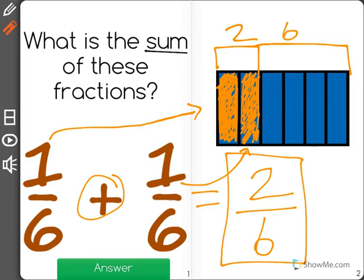And another way you could see that is when you're adding fractions, the denominator won't change because you're just adding on to the same group or the same rectangle, and you're just adding the numerator. 1 plus 1 is 2, and the denominator remains a 6.